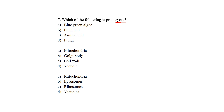Two terms to know: eukaryote and prokaryote. Prokaryotes are organisms that do not have a well-defined nucleus — the nucleus does not have a nuclear envelope, so it is called a nucleoid. Eukaryotic organisms have a very well-defined nucleus. The four options given are blue-green algae, plant cell, animal cell, and fungi. Blue-green algae is the answer because plant cells, animal cells, and fungi are all eukaryotic organisms with well-defined nuclei.